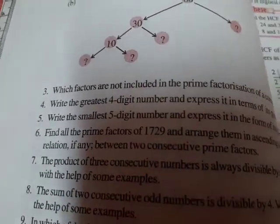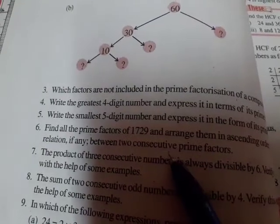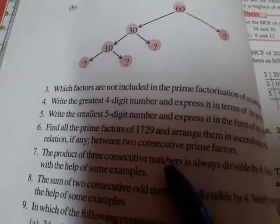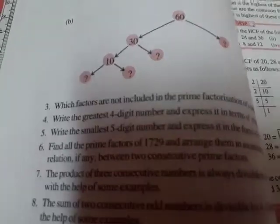You have to find the factors of 1729 and arrange the prime factors in ascending order. You have to find any relation between two consecutive prime factors and express it as well.